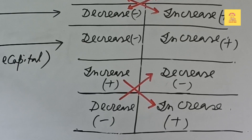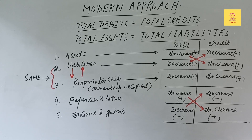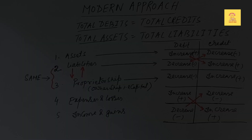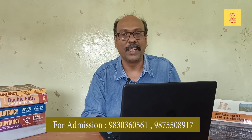Expenses and losses and income and gains are opposite conceptions, so a crisscross method is followed here as well. These are the rules for the modern approach. To solve any sum in accountancy, first we have learned the traditional approach and then the modern approach of accountancy. Hope you have understood the rules for debit and credit.